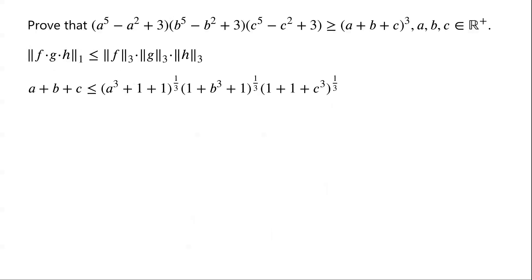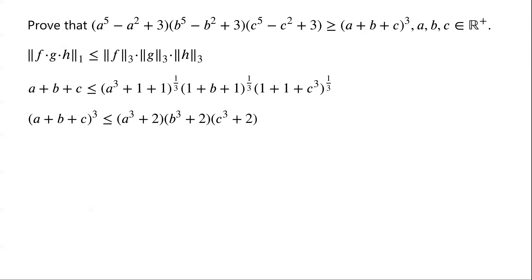By Hölder's inequality, we can now write: A + B + C ≤ (A³ + 2)^(1/3) · (B³ + 2)^(1/3) · (C³ + 2)^(1/3). Now we cube both sides of the inequality. We have (A + B + C)³ ≤ (A³ + 2)(B³ + 2)(C³ + 2).